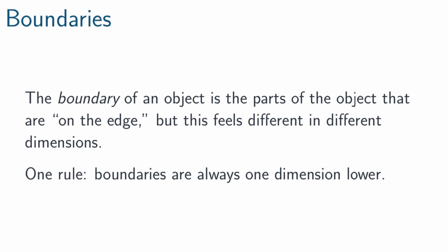In order to count the features of the 4D version of a cube, we have to understand boundary as a topological concept. This is a messy, casual definition, but we can think of the boundary of a math object as the parts of the object that are on the edge of it. This term, on the edge, kind of feels different in different dimensions, but I can tell you one thing: no matter what kind of math object we're talking about, the boundary will always be one dimension lower.